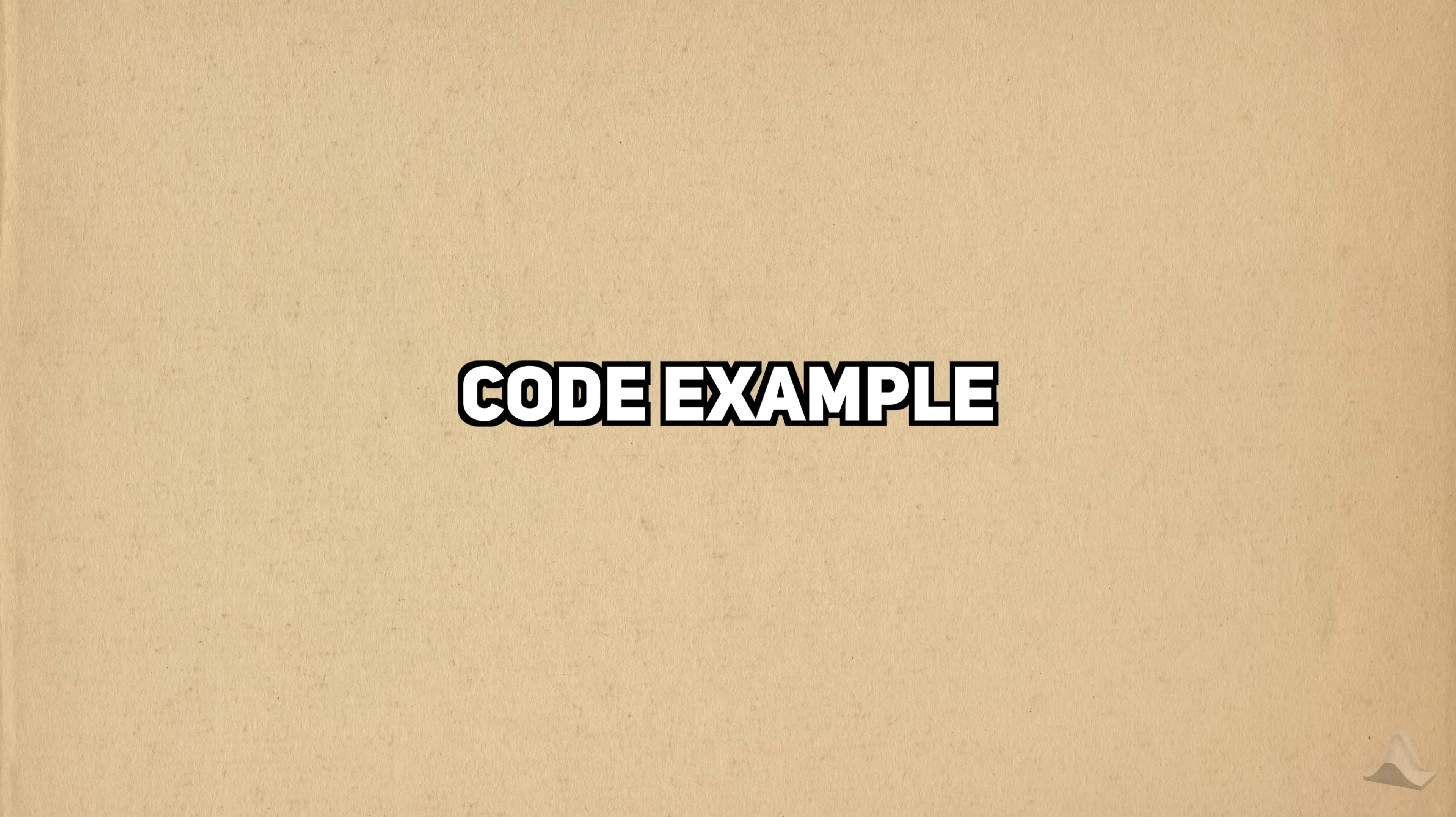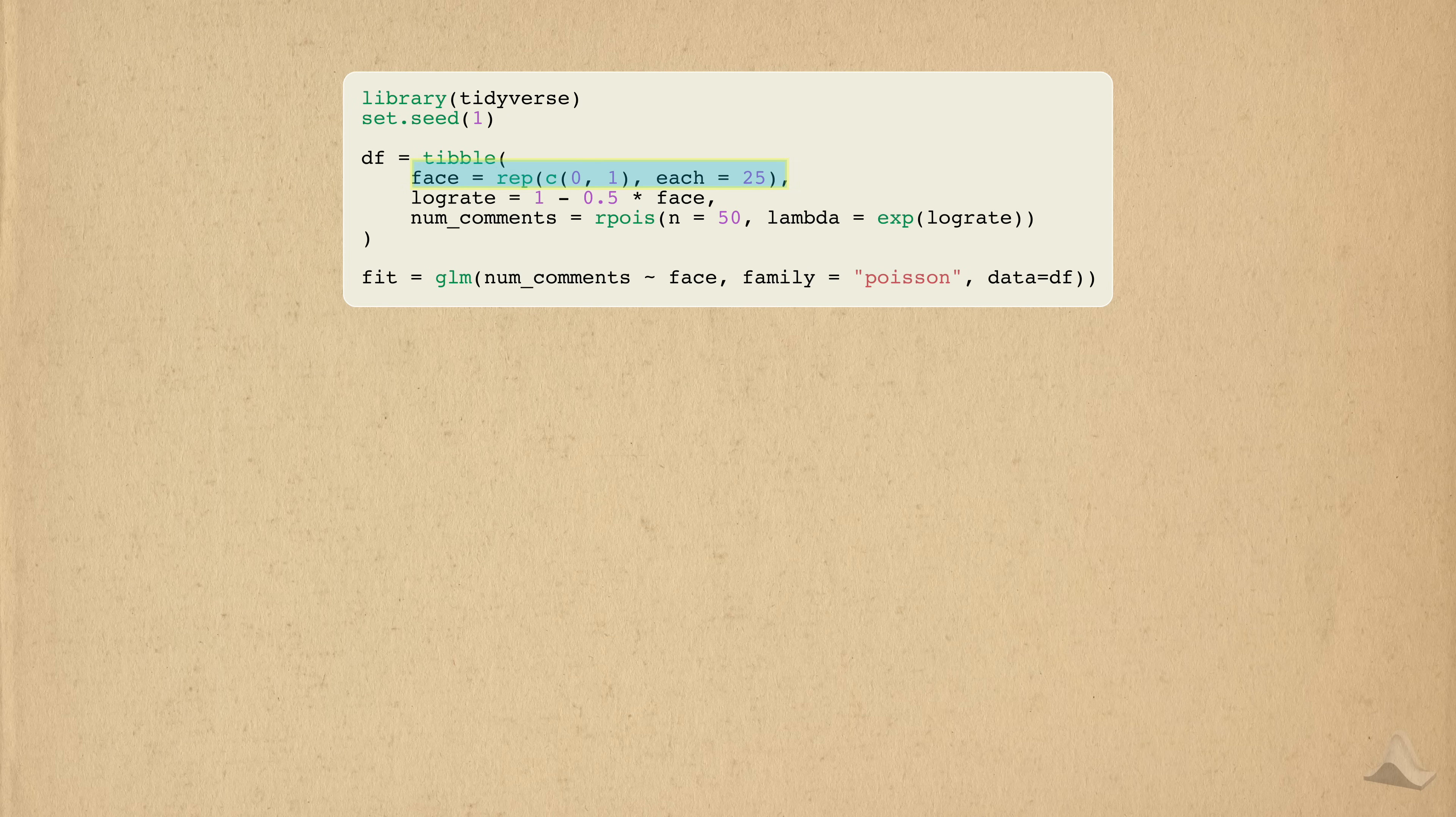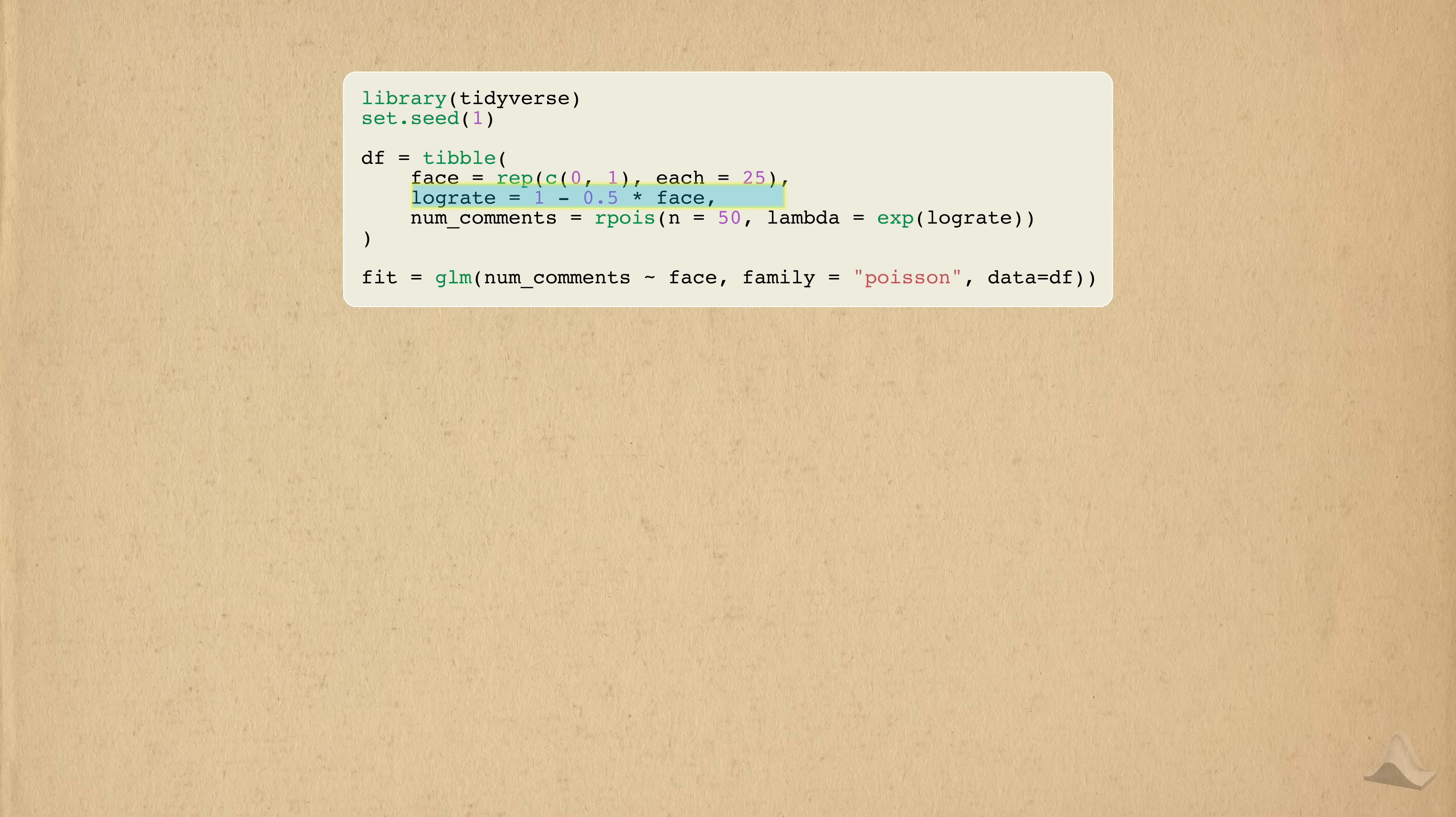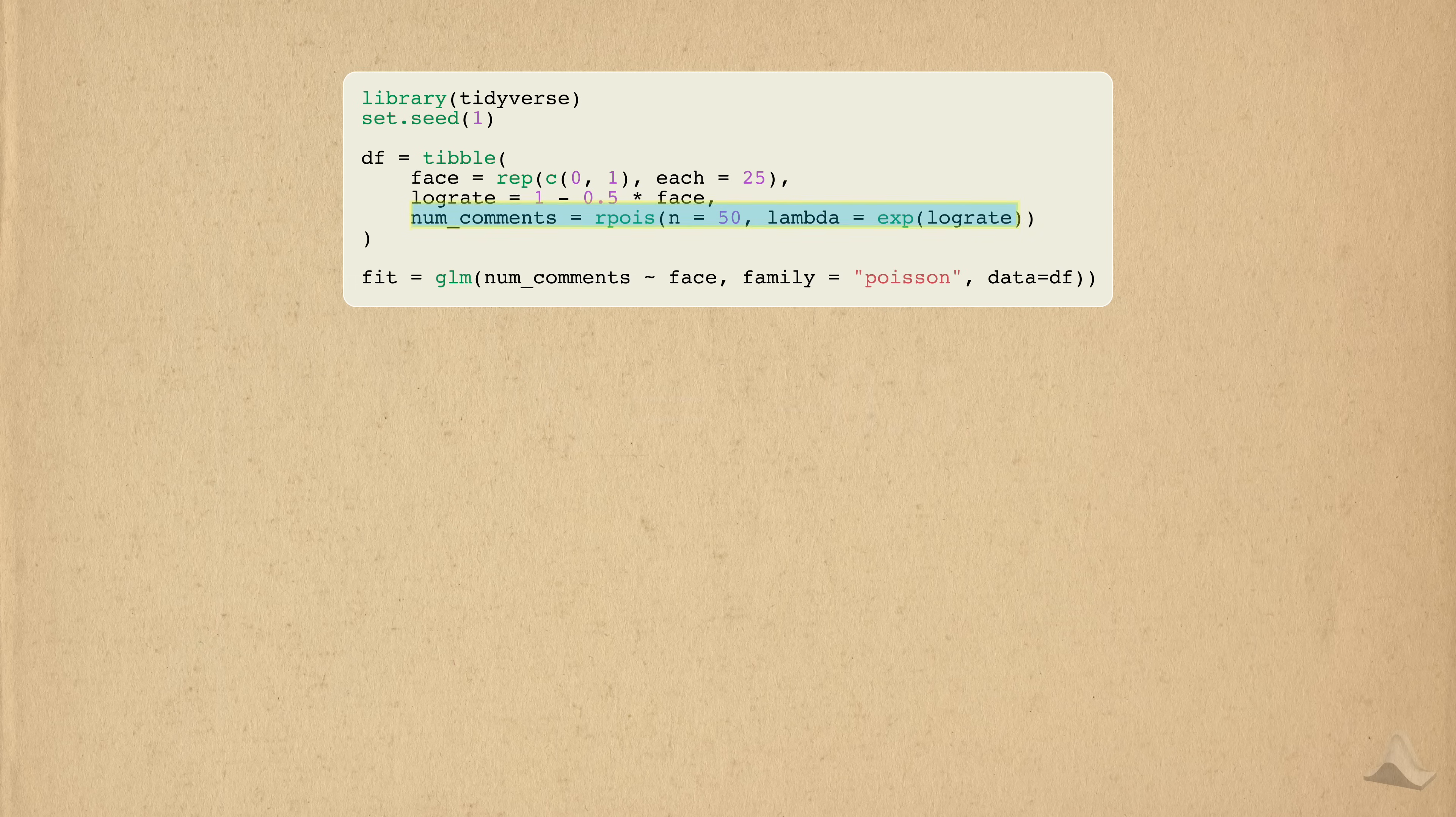To wrap up this video, we'll quickly implement a Poisson regression in R. First, we'll simulate some data based on the YouTube comment example I gave earlier. I'll simulate 50 binary observations here to represent the indicator of whether or not a thumbnail has my face on it. From here, we'll use this covariate to generate the log rate for the outcome. We'll give thumbnails without my face a log rate of 1, and we'll pretend that having my face decreases the log rate by half. Finally, we'll generate the count outcome based off these parameters.